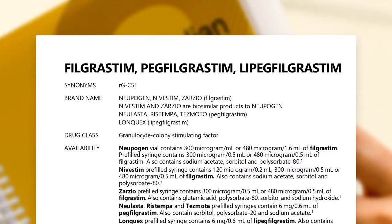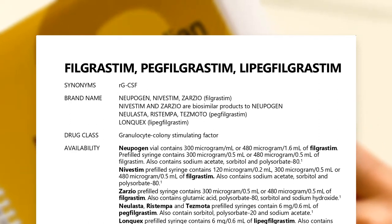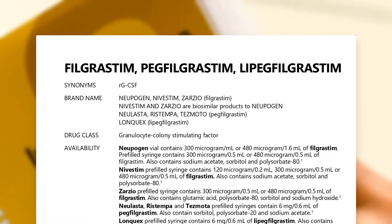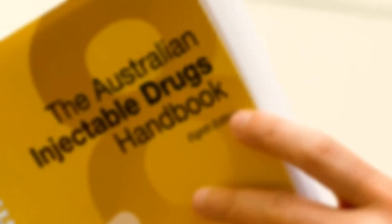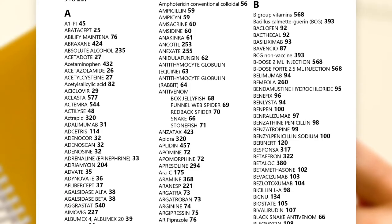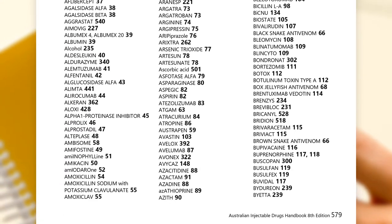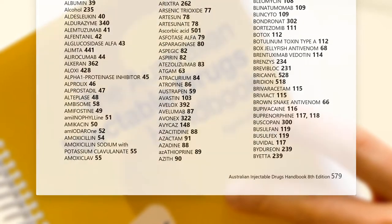Sometimes a monograph will contain information for more than one medicine, such as the monograph for filgrastim, pegfilgrastim and lipegfilgrastim. This usually means that the medicines are similar, but it does not mean that they are the same or that they are interchangeable. If you can't find the medicine you are looking for, go to the index at the back of the book where all medicines are listed by both the active ingredient and by brand name.